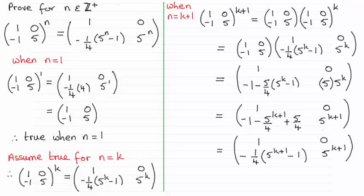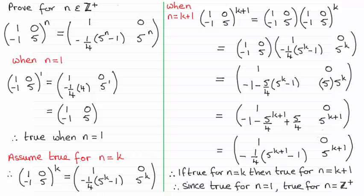We end up with minus a quarter all times 5 to the power (k+1) minus 1, and so this is looking really good. You can see that it's got the same pattern structure as we had originally, only wherever there was an n we now have it replaced with k plus 1. So in summary, we know that if it's true for n equals k then we've just proved that it's true for n equals k plus 1. Since it was true for n equals 1, it must be true for n equals 2, 3, 4 and so on — so it must be true for all positive integers.